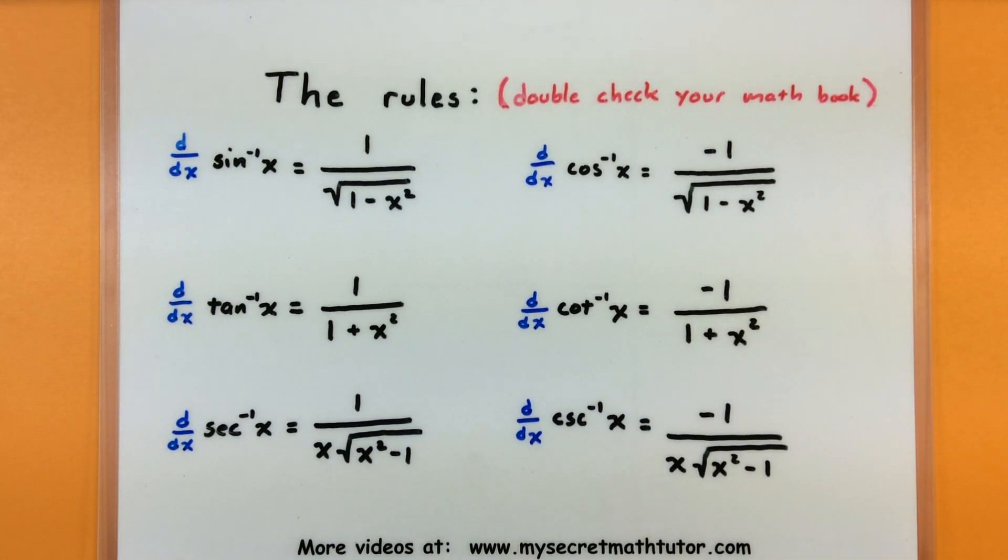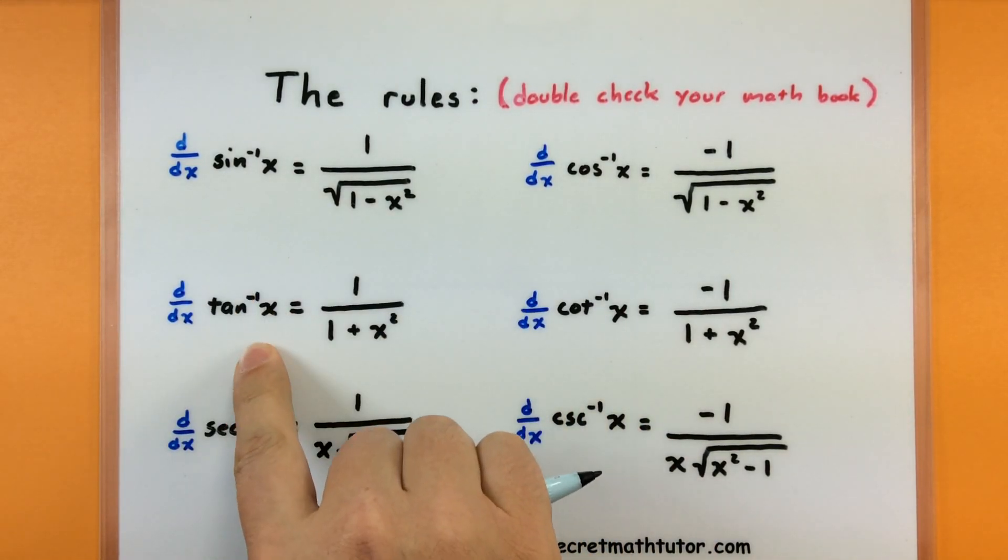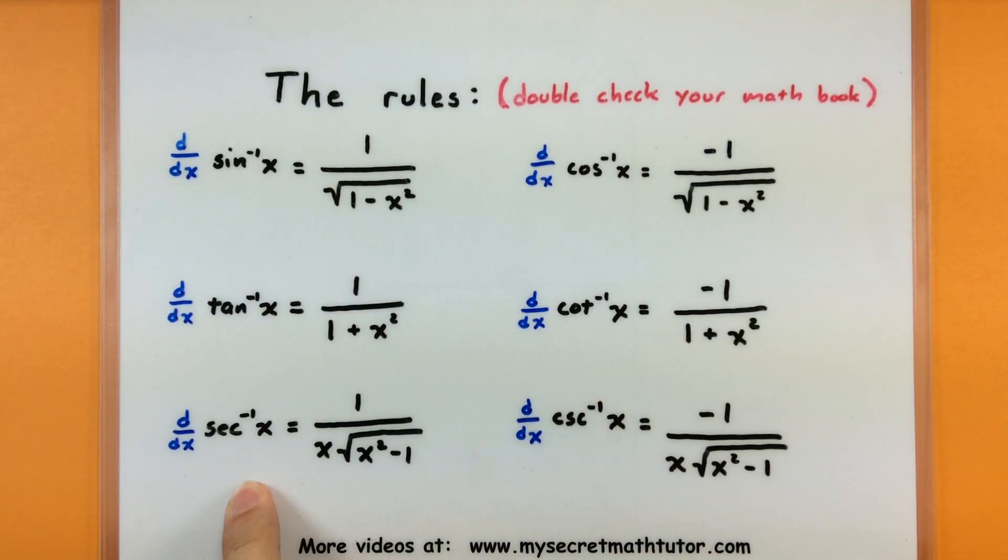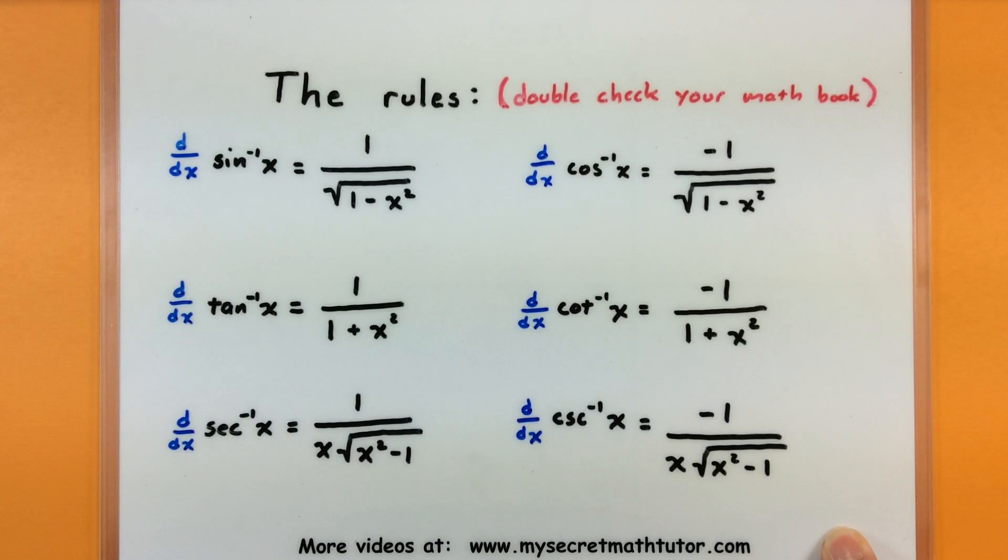So there's 6 functions and we have 6 rules. But don't worry, even though they look kind of complicated, there's really only 3 rules you have to remember. And those are the ones for inverse sine, inverse tangent, and inverse secant. As soon as you have these rules down, have them memorized, you really have the other ones memorized as well. They're exactly the same, they're usually just different by a negative sign.